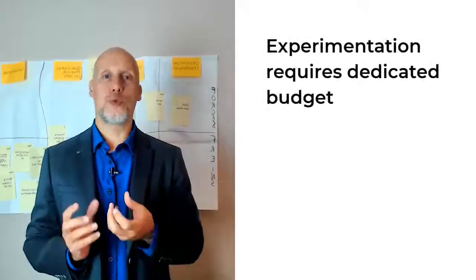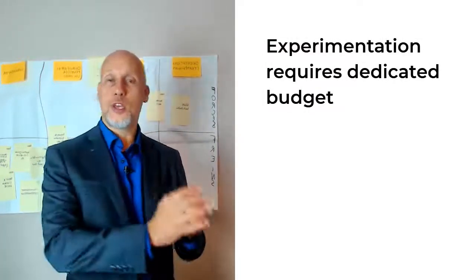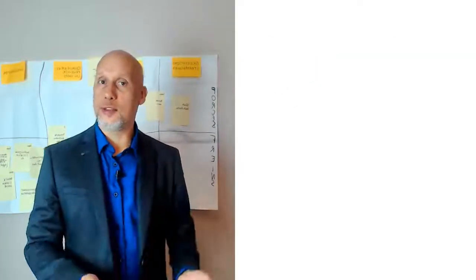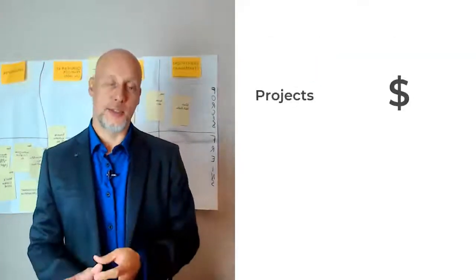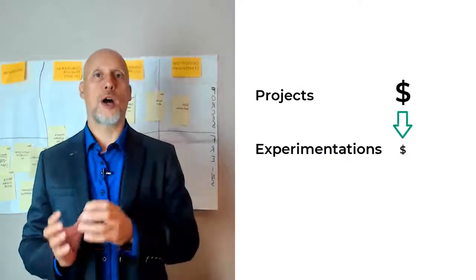In conclusion, we have to allocate specific funding for experimentation. And one way of doing that is to take two to five percent, which most organizations do, from a project budget to allocate it to experiments.